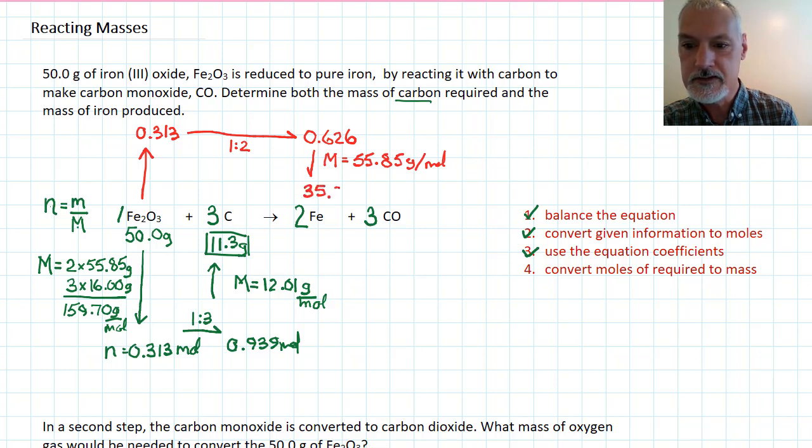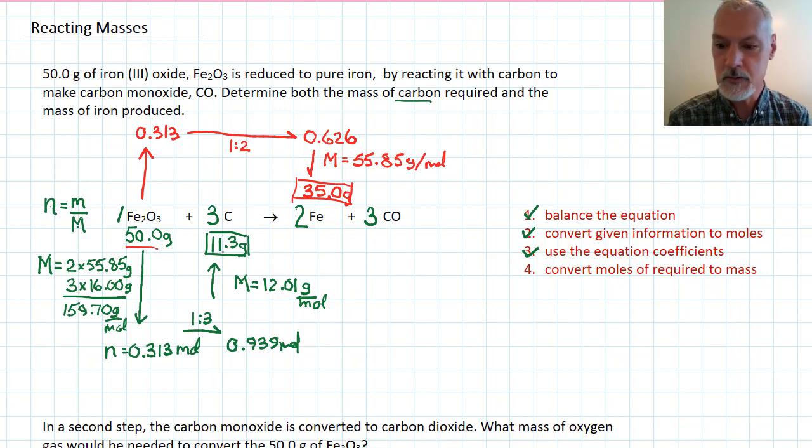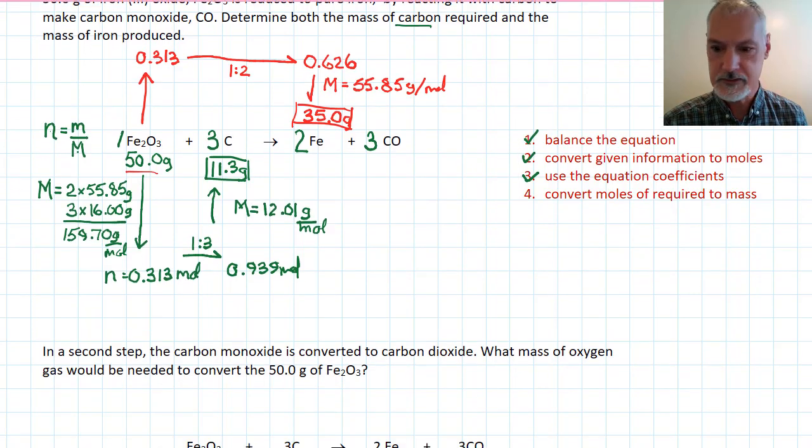I'm rounding my answer off to two significant digits, because my starting information had three significant digits. That's why my final answer should also have three. So, that would be the mass of iron I produce, here the mass of carbon I would require. Now, there's a second step that happens in this process, and I'll show it to you here.